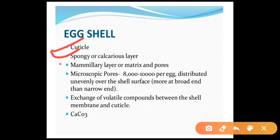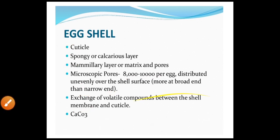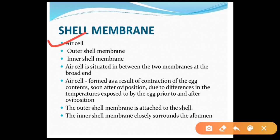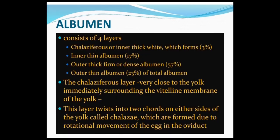The egg shell layers from outside are: cuticle, spongy or calcareous layer, mammillary layer, and aerometric layer. There are approximately 8,000 to 10,000 microscopic pores per egg, distributed unevenly over the shell surface — more at the broad end than the narrow end. These allow exchange of volatile compounds between the shell membrane and cuticle. The shell is made up of calcium carbonate. The air cell is situated between the two shell membranes at the broad end and forms as a result of contraction of egg contents soon after oviposition, due to temperature differences.